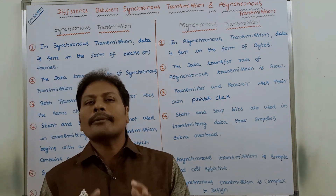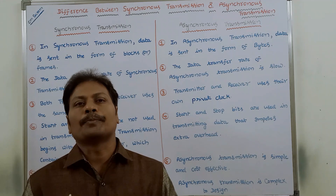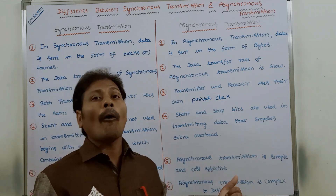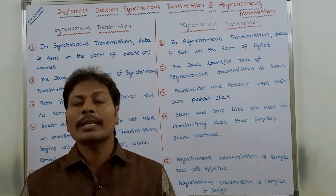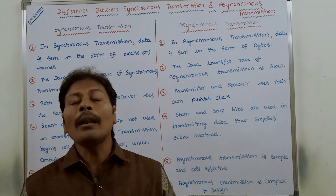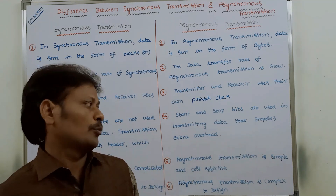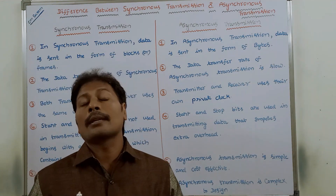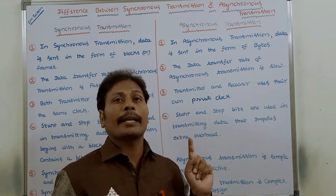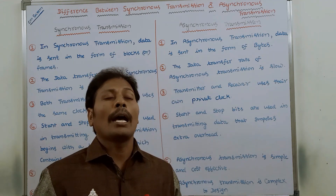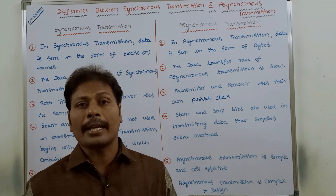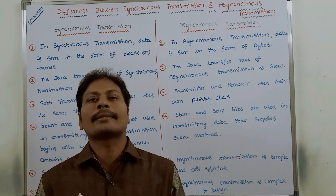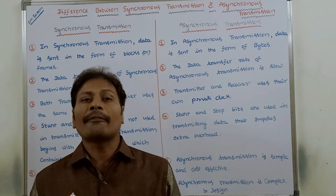The fifth point: synchronous transmission is complicated and costly, whereas asynchronous transmission is simple and cost effective. The sixth point: synchronous transmission is simple to design, whereas asynchronous transmission is complicated to design because of the start and stop bits and the use of private clocks.